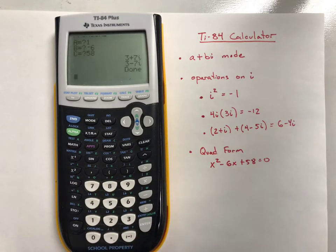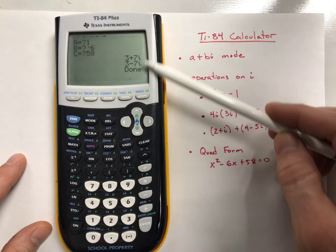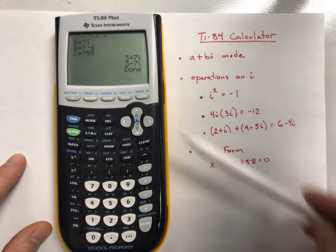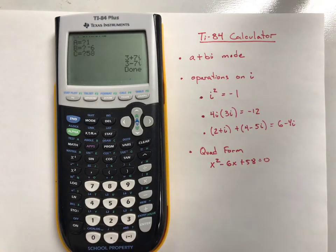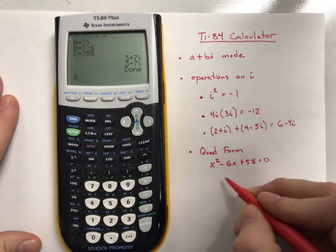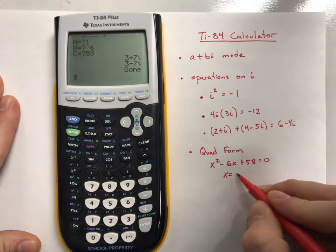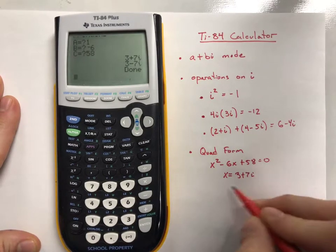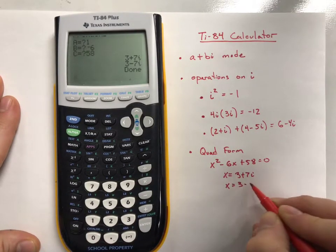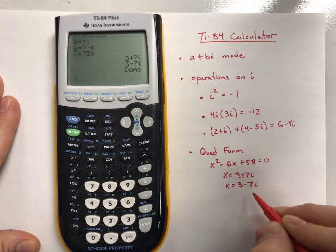The nice thing about it being in A plus BI mode is that it gives us our non-real solutions or non-real roots to this quadratic. So you have your conjugate pair of 3 plus 7I and x equals 3 minus 7I for your solutions.